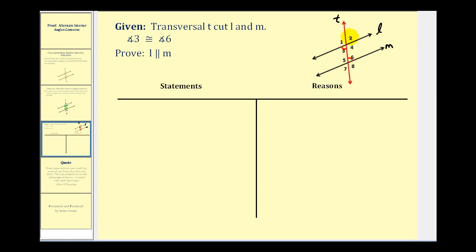Notice that angle two and angle six are corresponding angles, and angle two happens to be a vertical angle with angle three. So by using the definition of vertical angles we can say that angle three and angle two are congruent, and then that angle two is congruent to angle six, and therefore the lines will be parallel. So let's go ahead and get started.